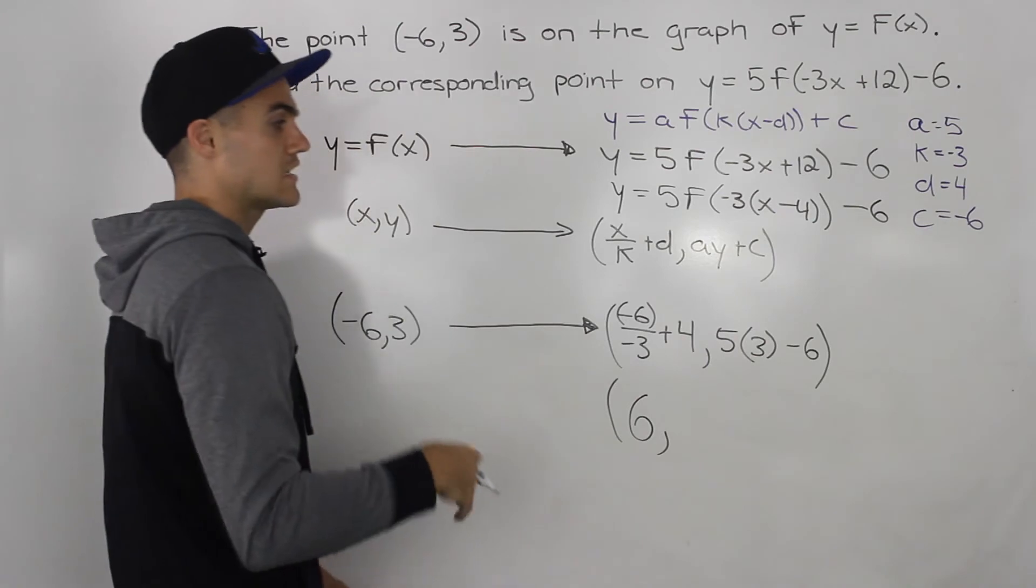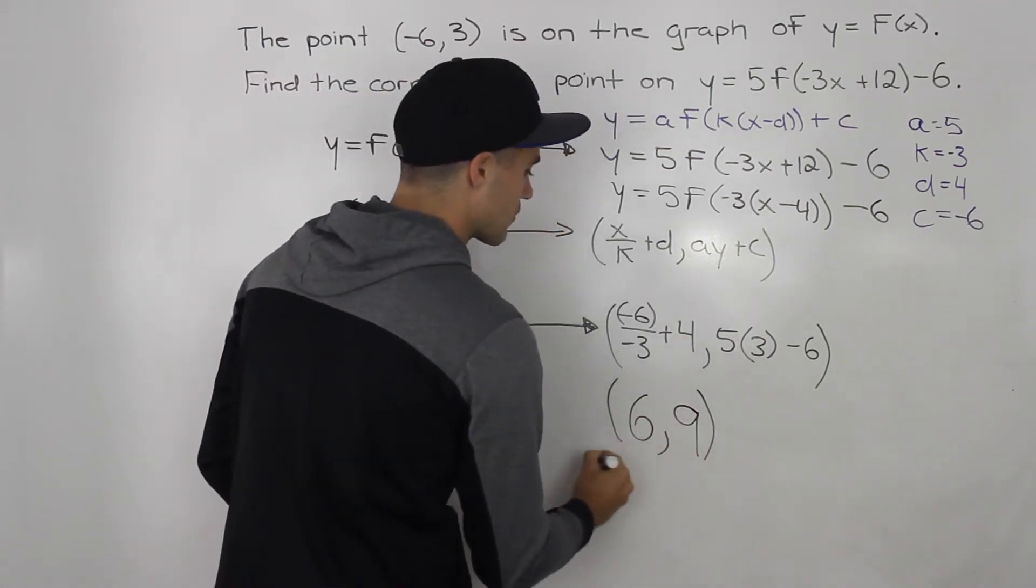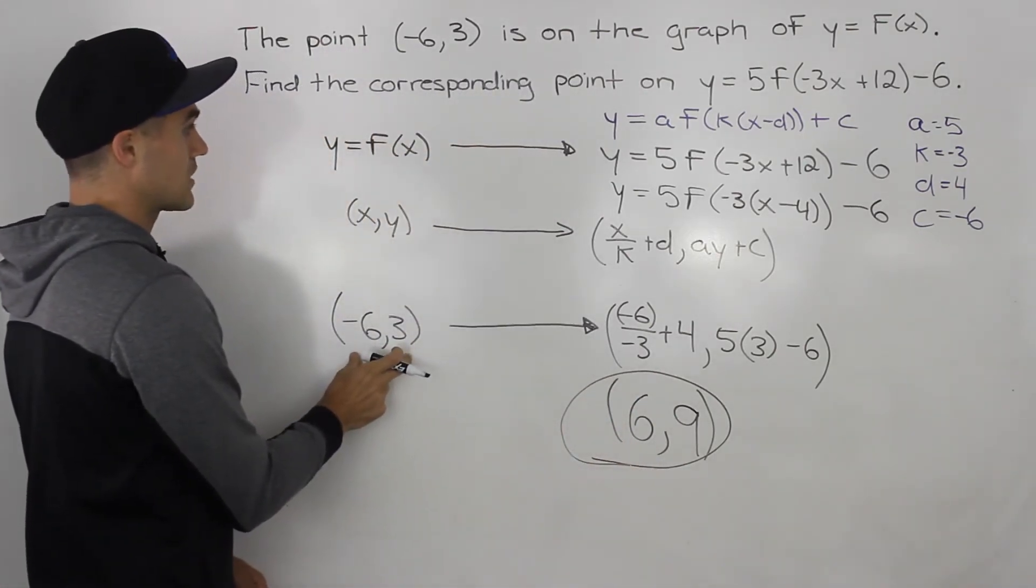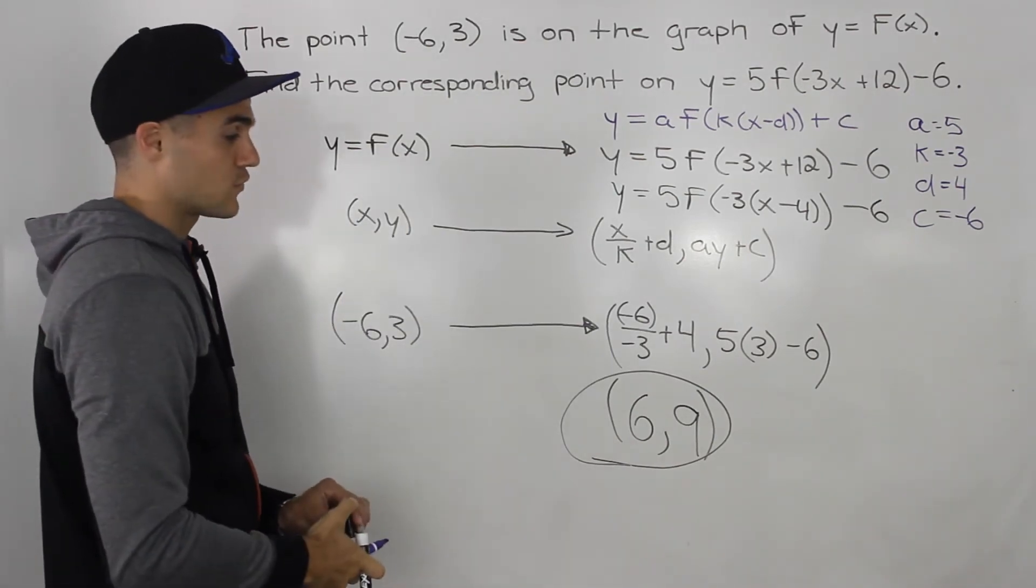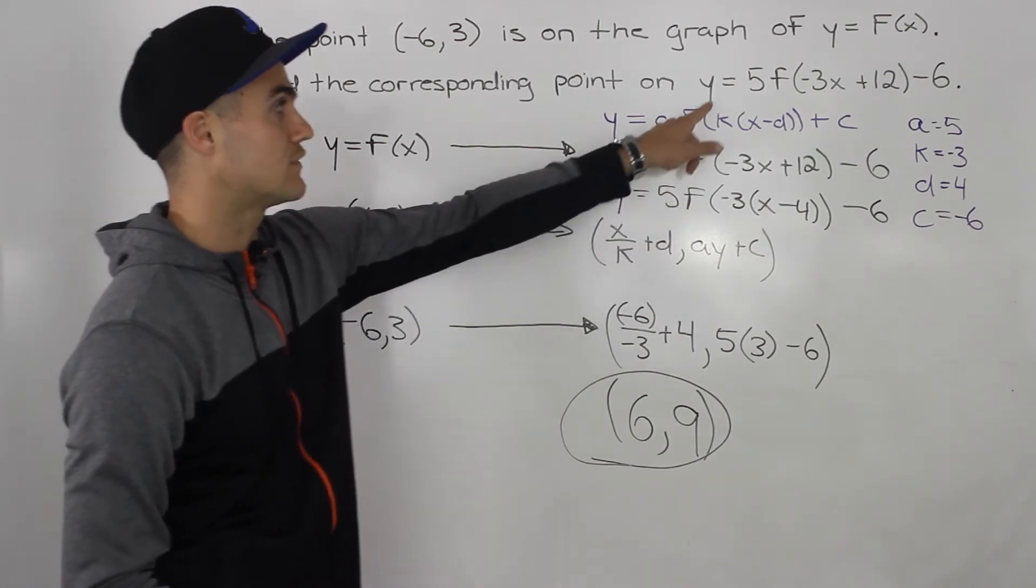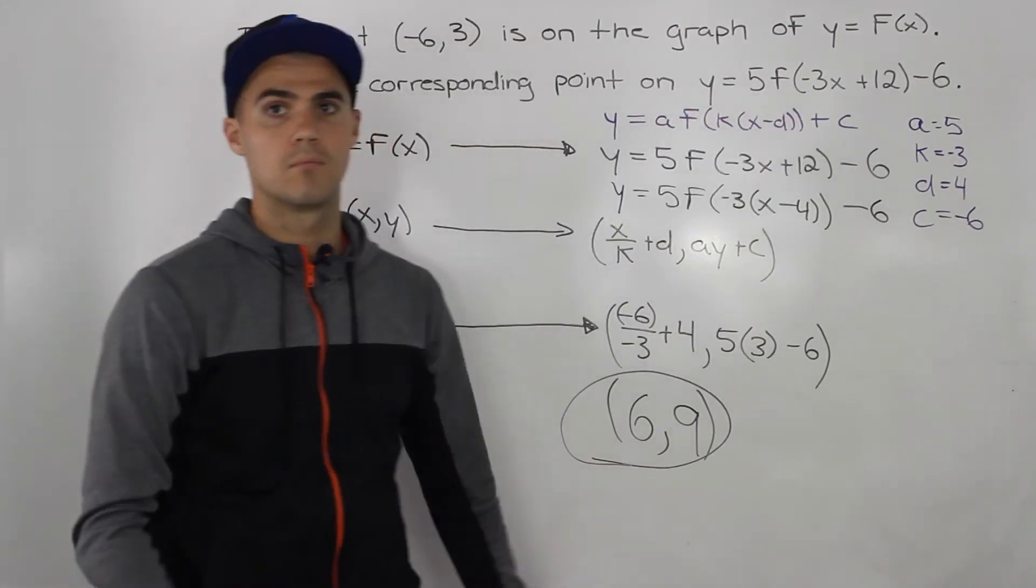And then 5 times 3 is 15, 15 minus 6 gives you 9. So that there is your final answer. So if (-6, 3) is on y = f(x), then the corresponding transform point is going to be (6, 9). And that's going to be on the function y = 5f(-3x + 12) - 6.